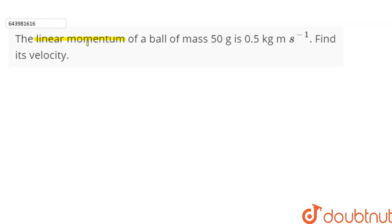The linear momentum of a ball of mass 50 grams is 0.5 kg meter per second. Find its velocity.